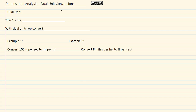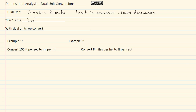Dimensional analysis: dual unit conversions. With dual unit conversions, we have to convert two units — one unit in the numerator and one unit in the denominator. 'Per' represents the fraction bar or division bar. With dual units, we convert one unit at a time, meaning you either focus on the unit in the top first and take care of it, then do the denominator, or vice versa.